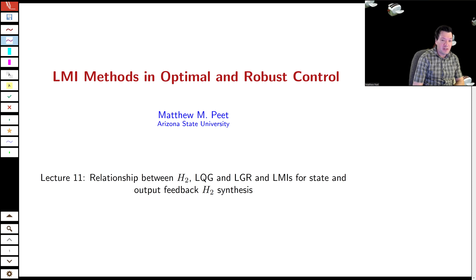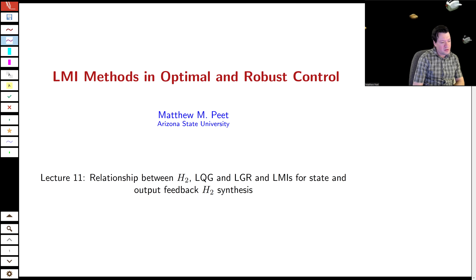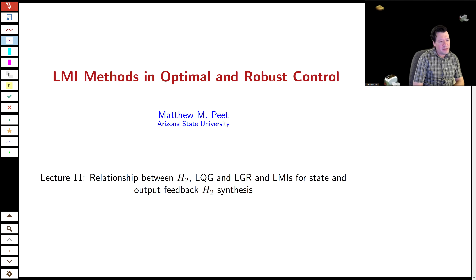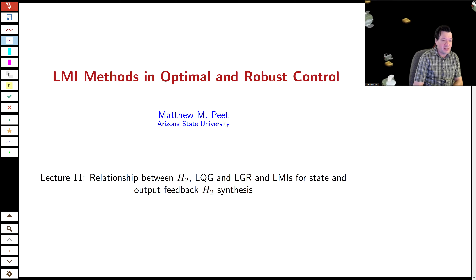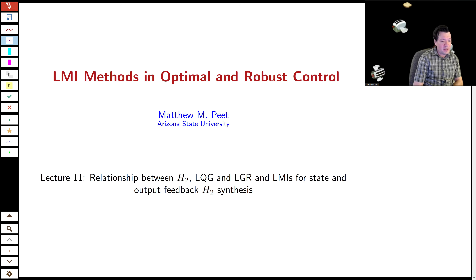We've been focusing on the H-infinity norm because it has some very nice real practical physical interpretations. Now, both of these norms are transfer function norms — they measure the size of the transfer function in some sense. There's a question: is measuring the size of the transfer function actually helpful? Because really we're interested in physical properties of the system. In the H-infinity case, we had a strong correlation between that norm and the system properties.